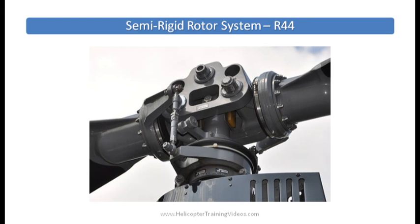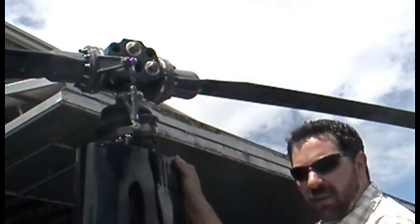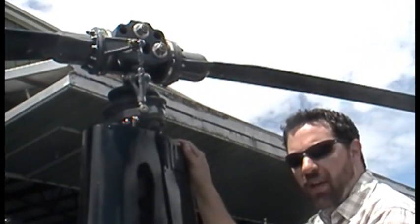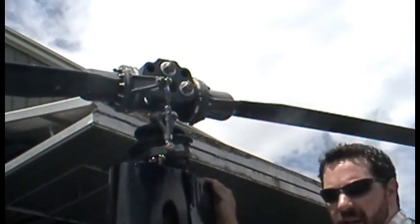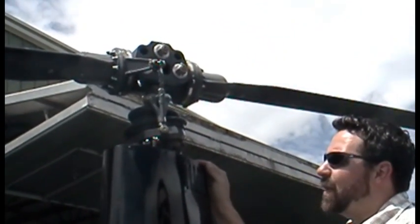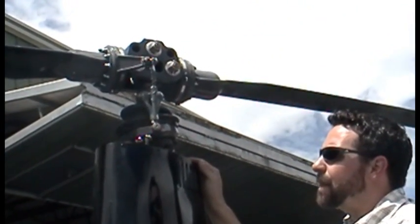Here's an example of a semi-rigid rotor system. This one's the R-44. The R-22 is very similar, just smaller components. So this is the main rotor system of the R-22, and as we talked about earlier, this is a semi-rigid system.